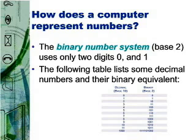Numeric data consists of numbers that might be used in arithmetic operations. For example, your annual income is numeric data, as is your age. The price of a bicycle is numeric data, as is the average gas mileage for a vehicle, such as a car or an SUV.